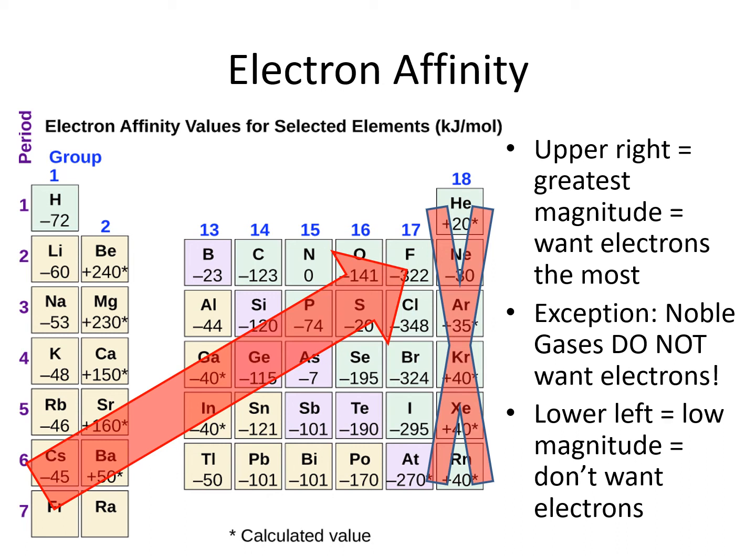The magnitude of the electron affinity increases across a row as effective nuclear charge increases, because the electron that is being added feels more attraction from the positive charge in the nucleus.